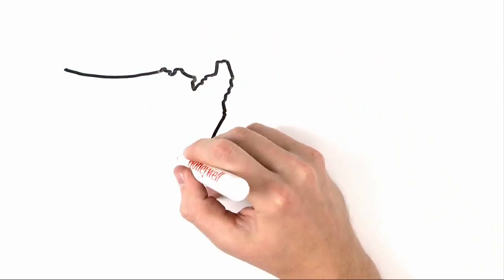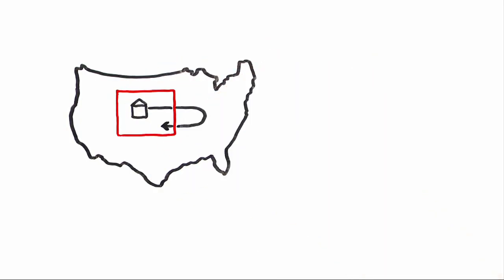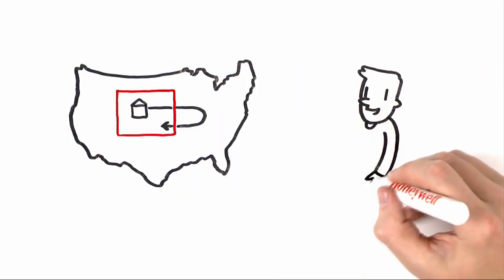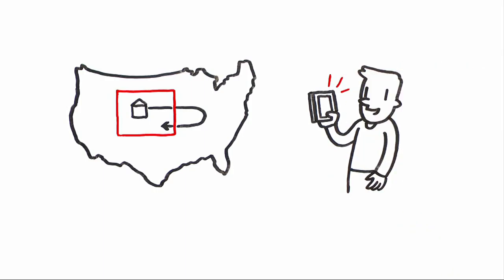It's simple. You create a virtual area for your vehicle or device. When it enters or exits that area, you'll be notified with a text or email immediately.